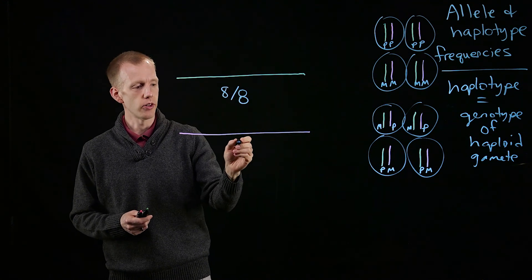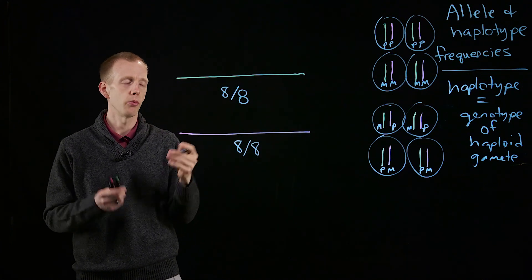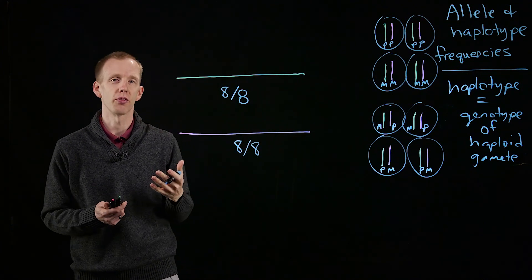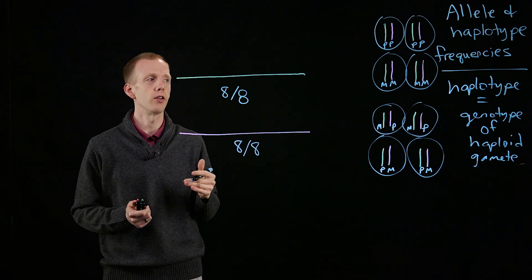And all of the gametes also have one copy of the pink chromosome, and that's what we should expect as a result of meiosis, because every gamete is going to have one copy of each of the chromosomes present in an individual.